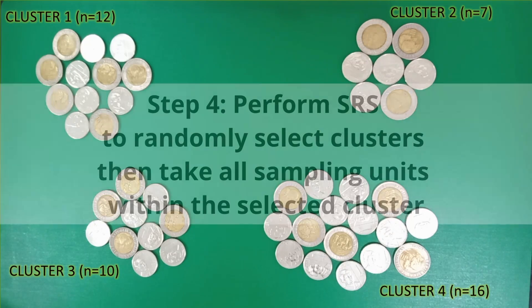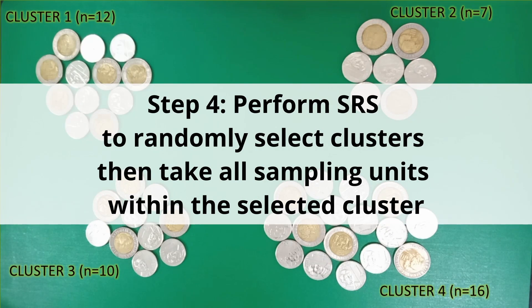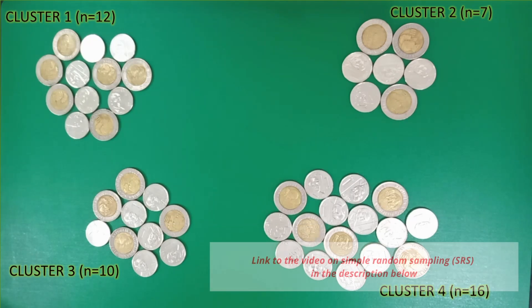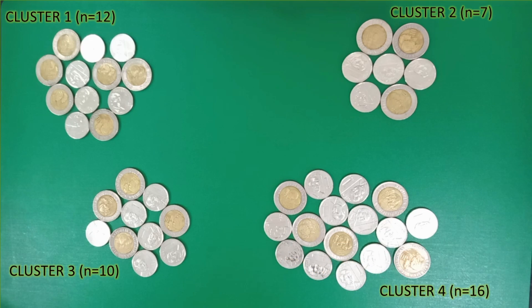The next step is where the randomization comes in. We perform simple random sampling to select which cluster or clusters we will include in our study. You can watch my video on simple random sampling if you want a refresher. Since we have resources for at most three clusters and we can more or less reach our effective sample size with two or more clusters, we generate three random numbers between one and the total number of clusters, which is four.